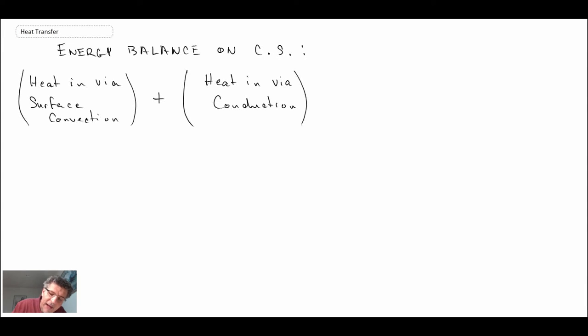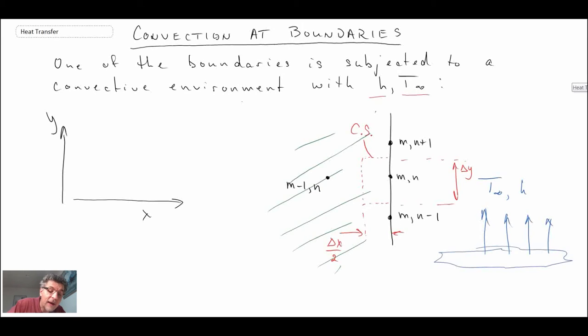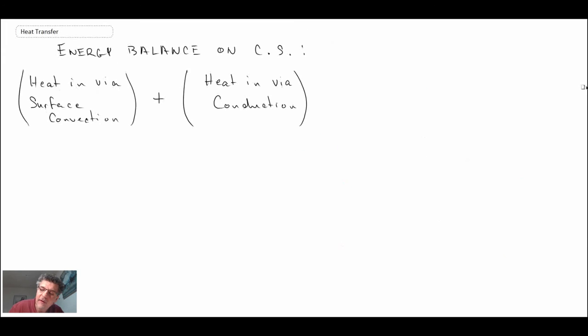And looking back at our schematic, we can have conduction coming in. Let me put that. I'll use red. Conduction can be coming in from this surface, or from that node, I should say, through there and through there as well. Convective heat transfer, obviously, is going to be coming in this way. And then finally, we have to consider the fact that we may have internal generation within our little control volume, within the control surface.